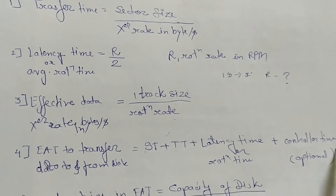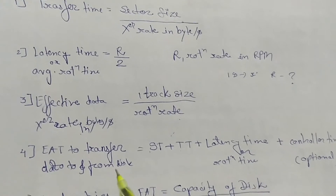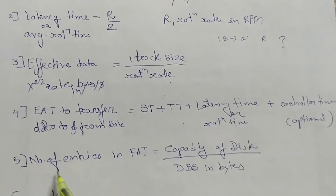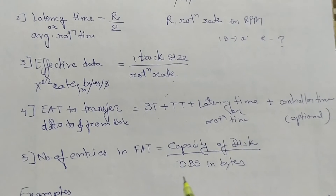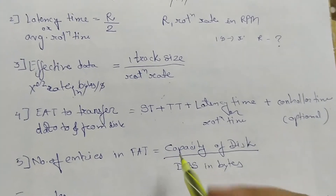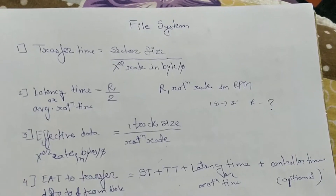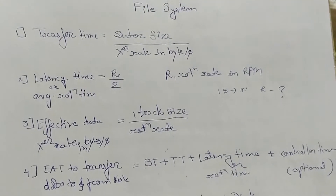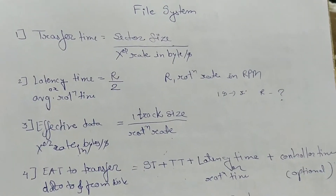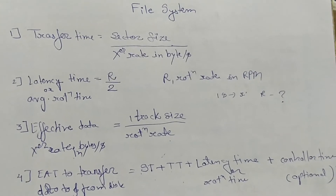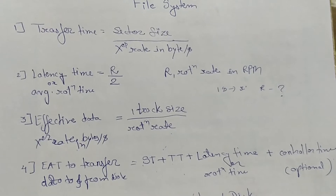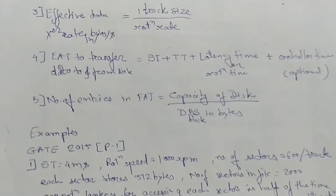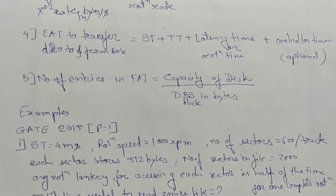So the compulsory components are seek time, transfer time, and latency time; controller time is optional. The number of entries in a file allocation table equals disk capacity divided by data block size in bytes. These are the key formulas for file system numericals. The first question we will solve is from the GATE 2015 Paper 1.